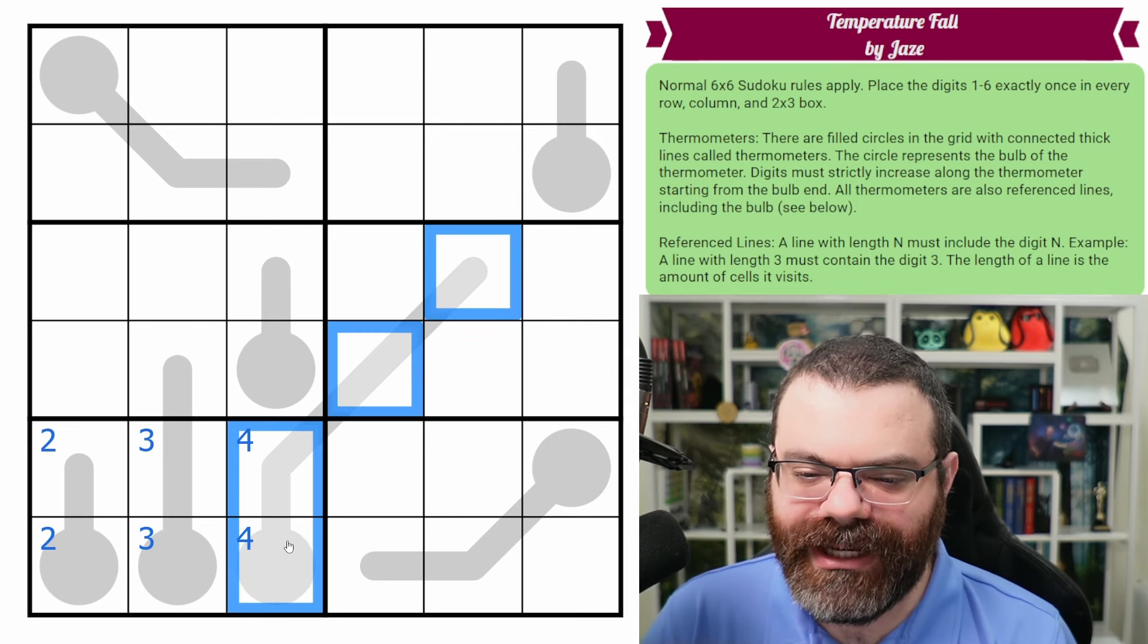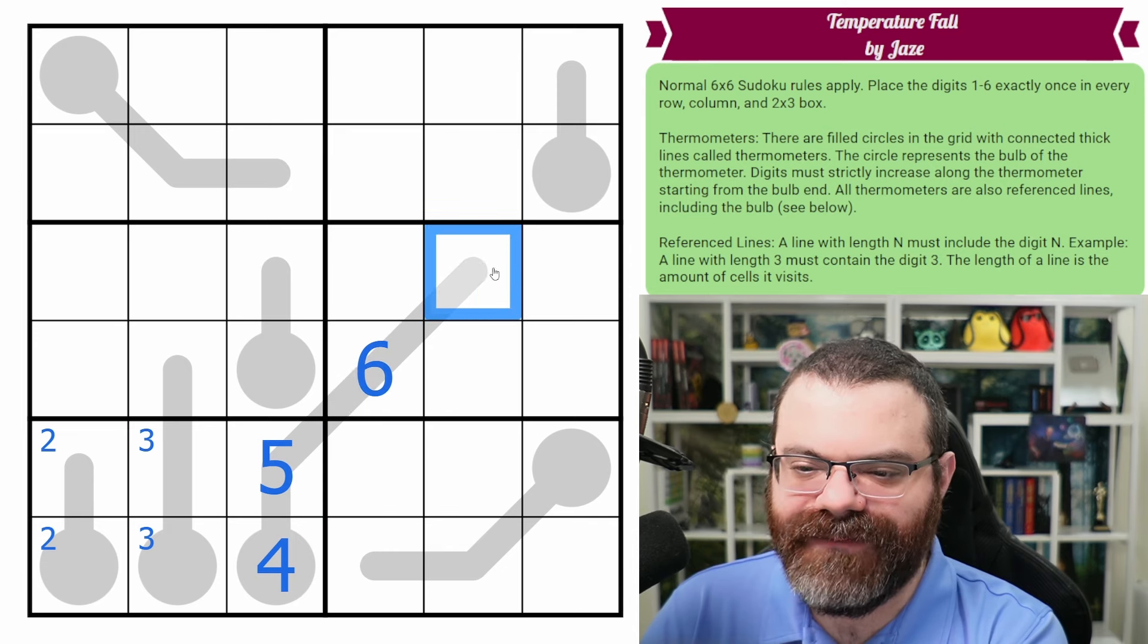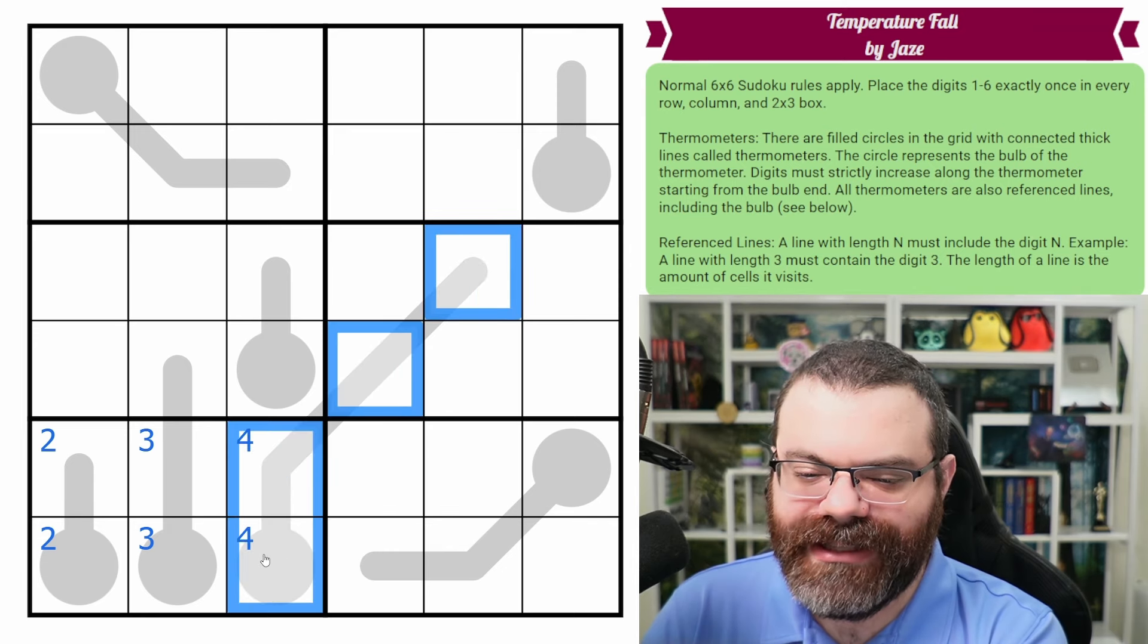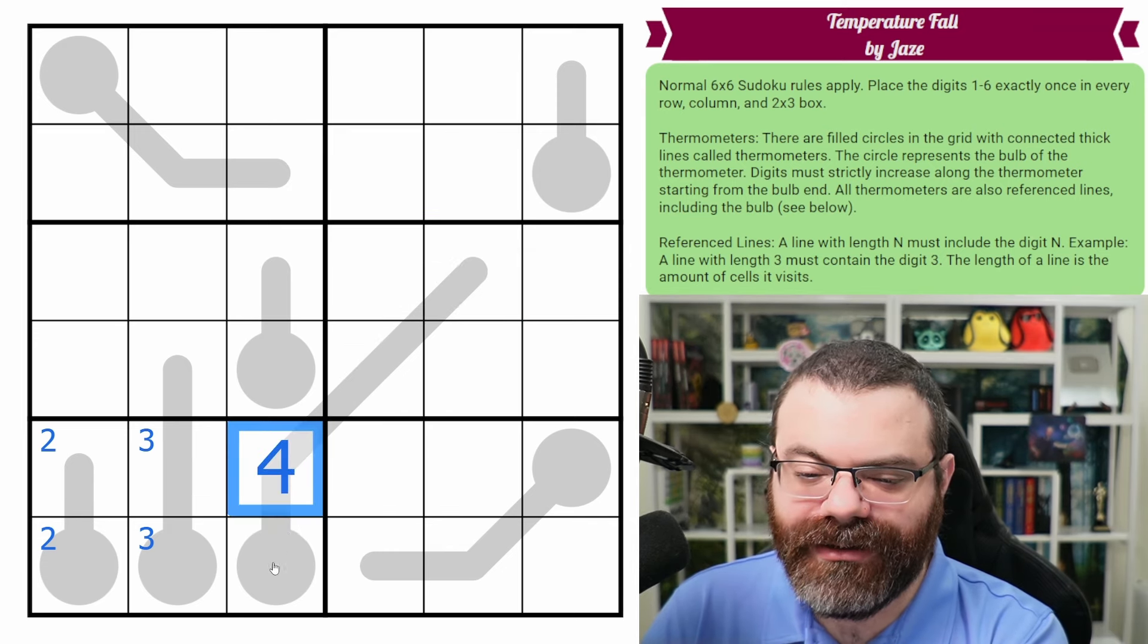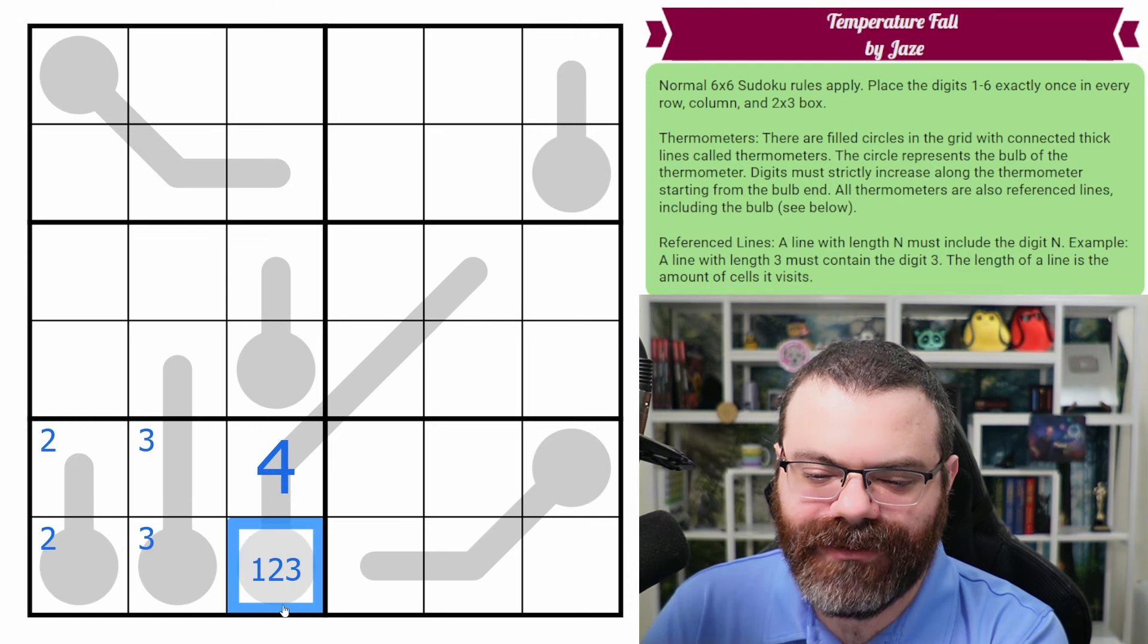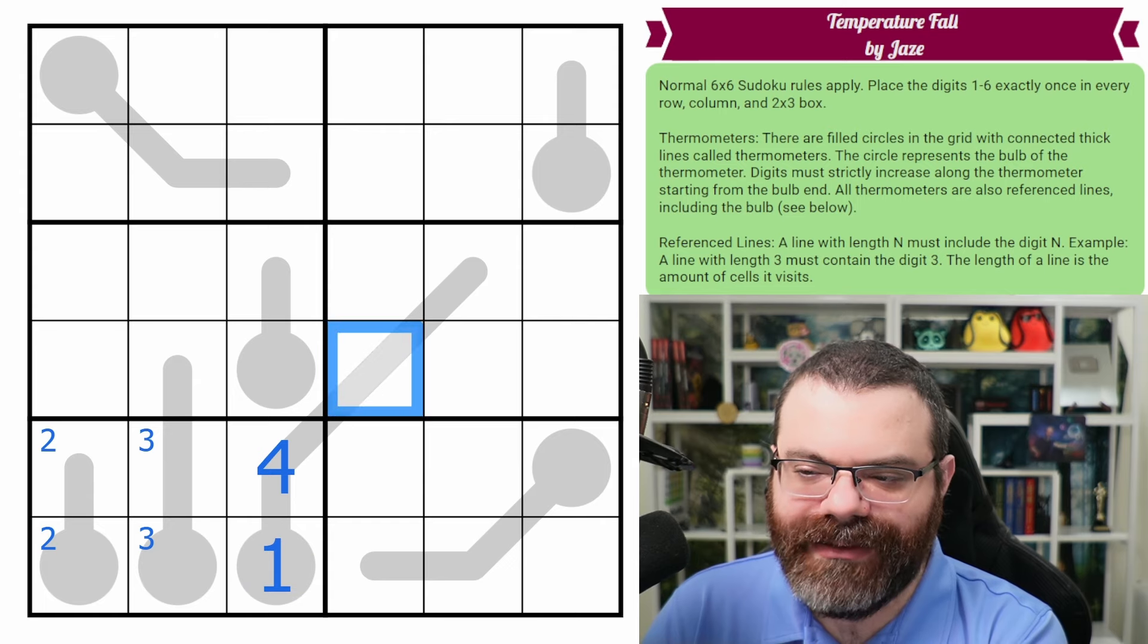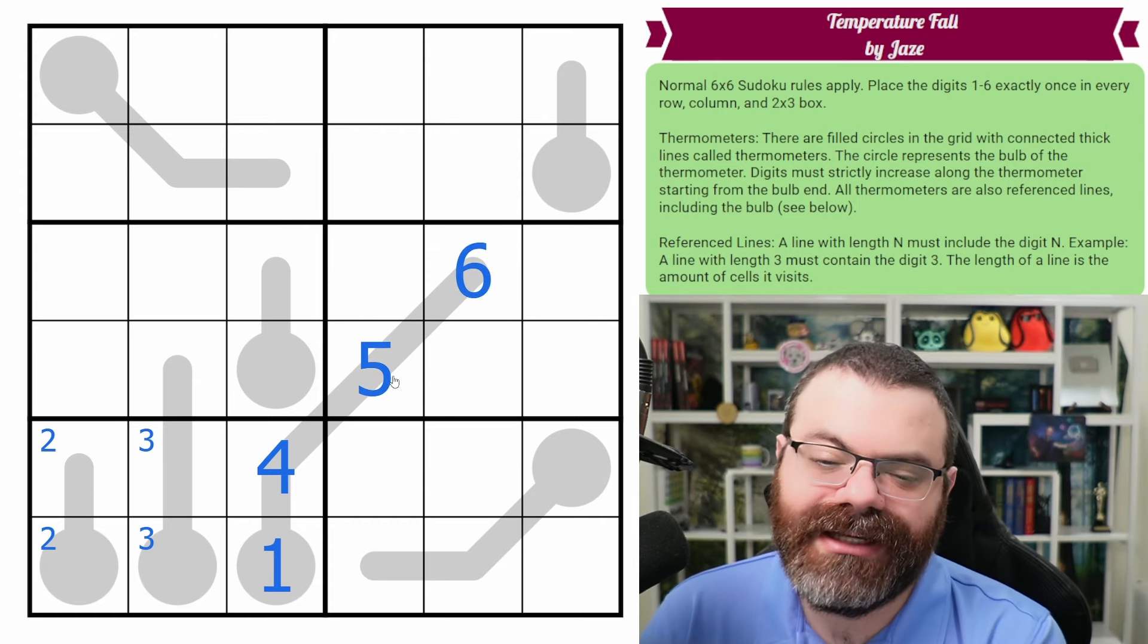Now six is our biggest number though, right? So if this was a four, we'd go five, six, and then we'd have nothing to put here. So actually this can't be the four. The four ends up here. This is the other, this has to be the one, right? Because it has to be less than four. It can't be two or three. So we placed the one as well. And then now this goes five, six. Very nice. That's a cool opening.